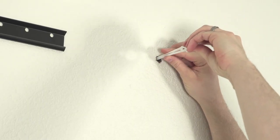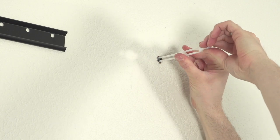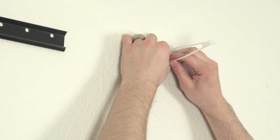If the ends of the hang rail are more than four inches away from a stud, use a toggle bolt included in the fastener pack to safely secure the hang rail to the wall.